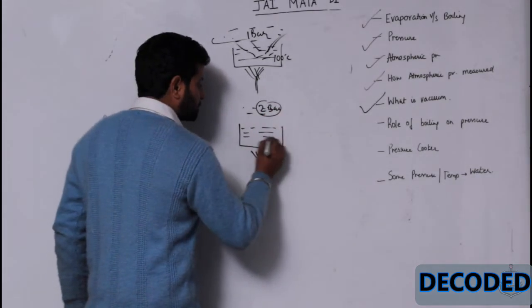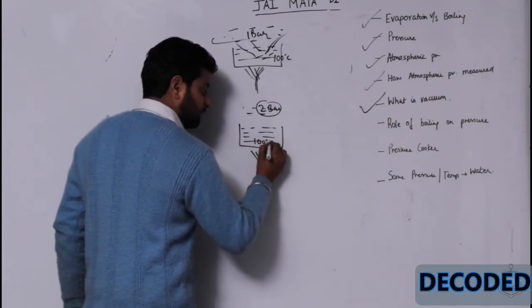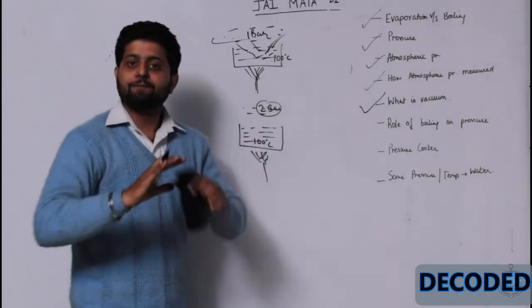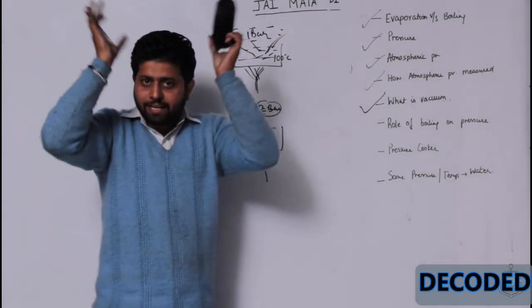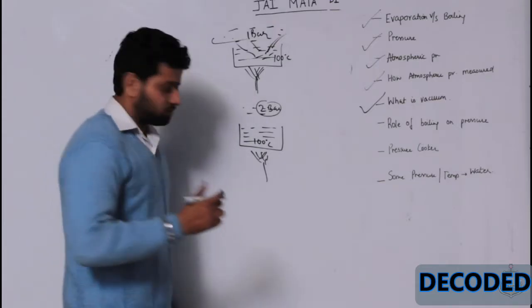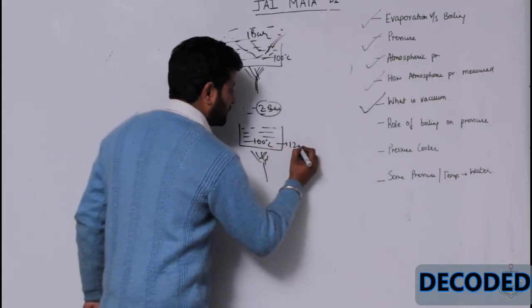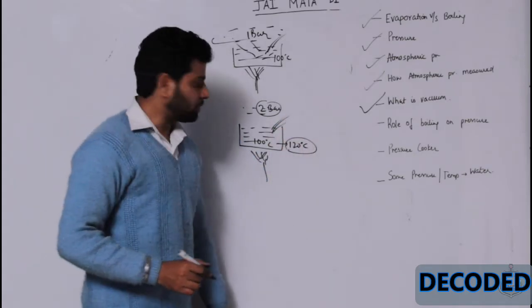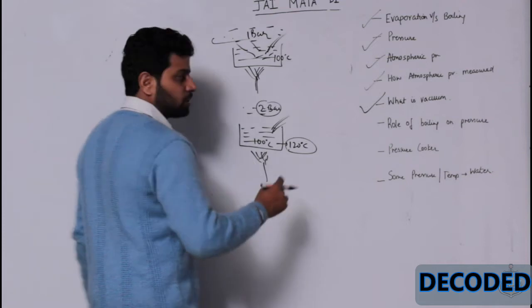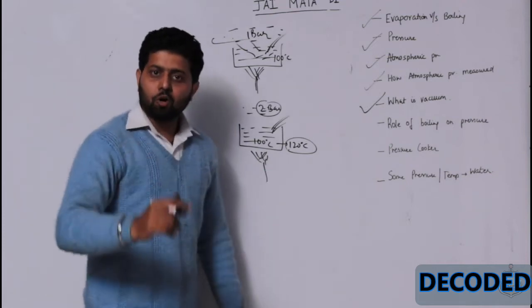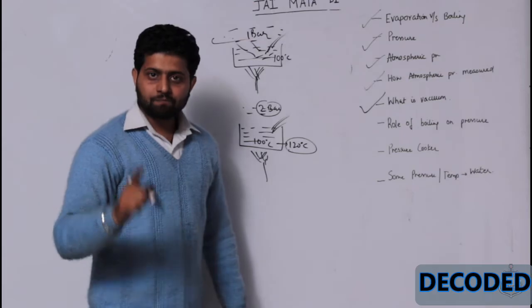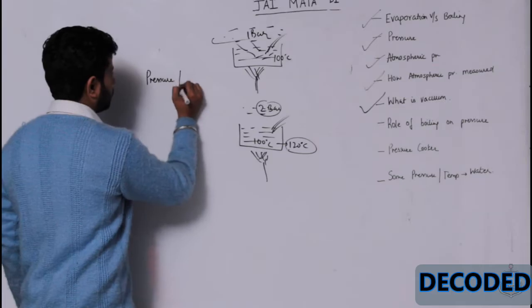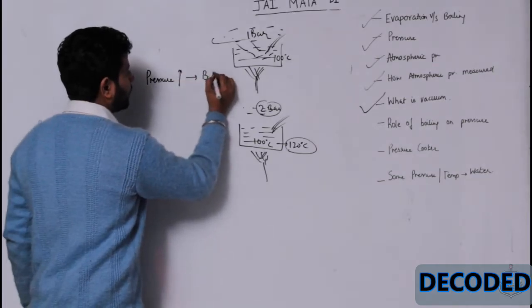Now, even if this water molecule tries to evaporate, to jump out into the vapor form, it won't be able to do that, because now it is like a weight acting on it. So, you will have to heat it more. 120 degree centigrade. Sufficient kinetic energy for it to go out. Similarly, if you make it 3 bar, say 130 degree centigrade. 4 bar, say 140 degree centigrade. So what is happening? By increasing pressure, we increase the boiling point.